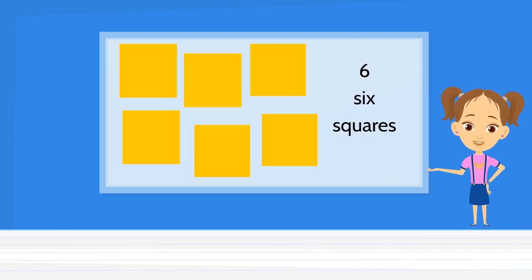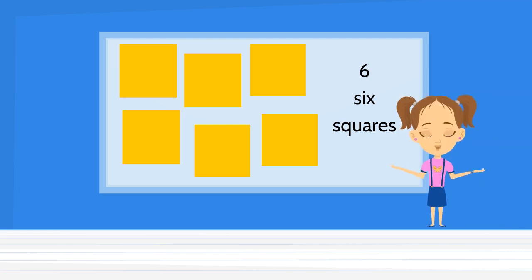There are six squares. Square is a 2D shape. It has four sides.